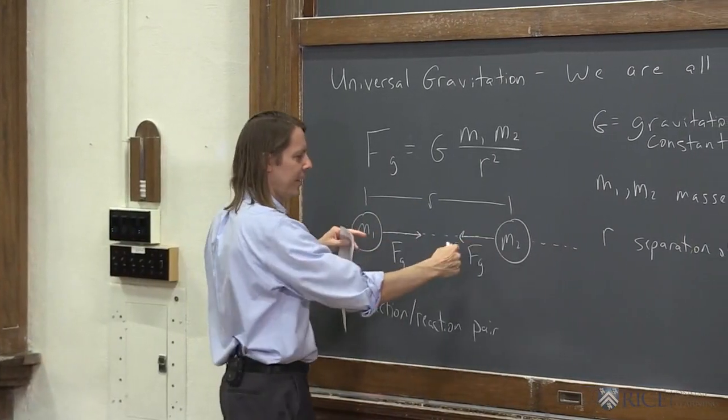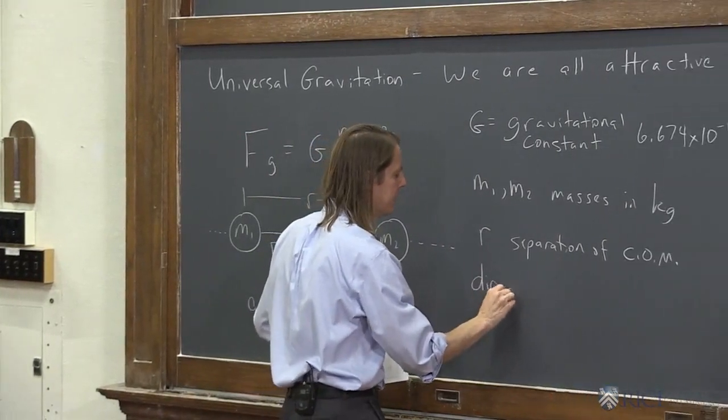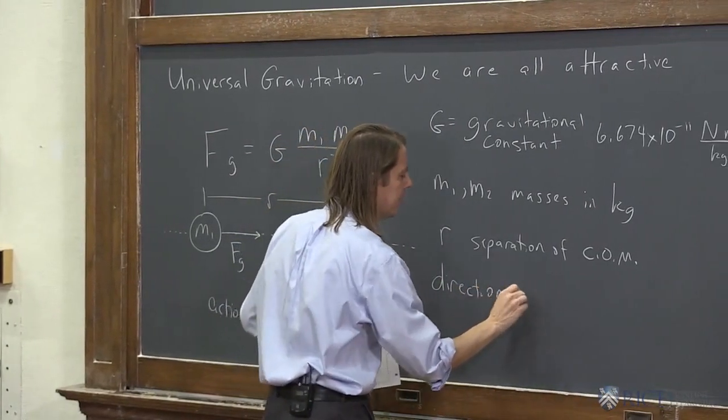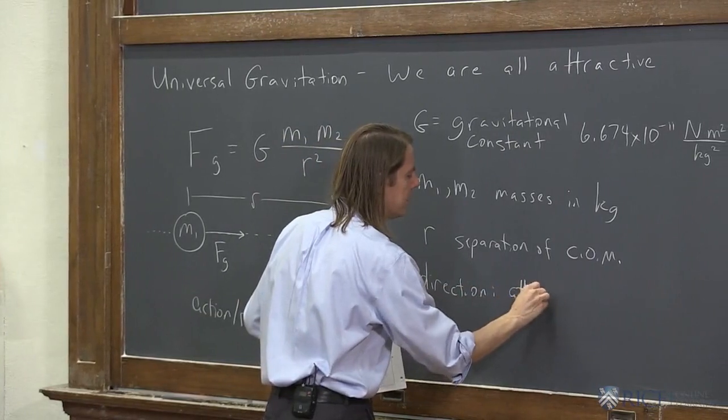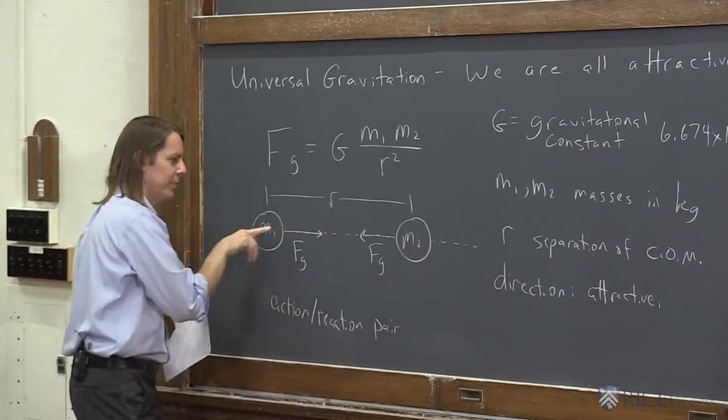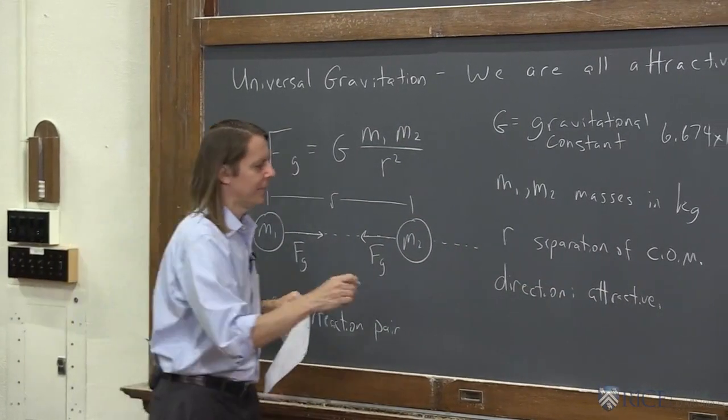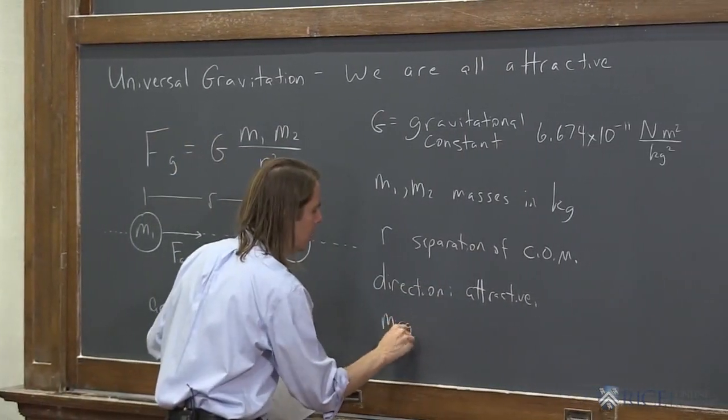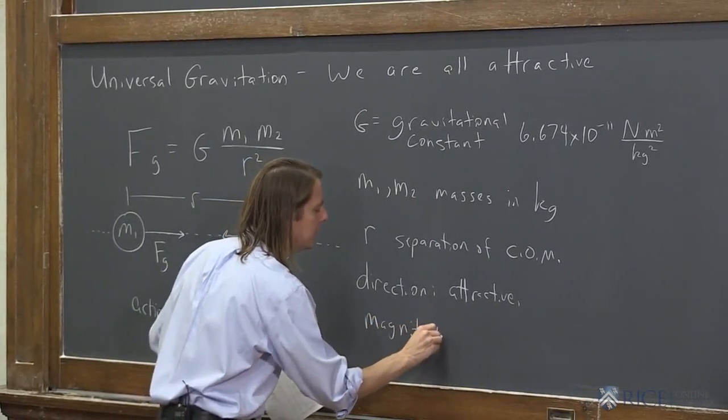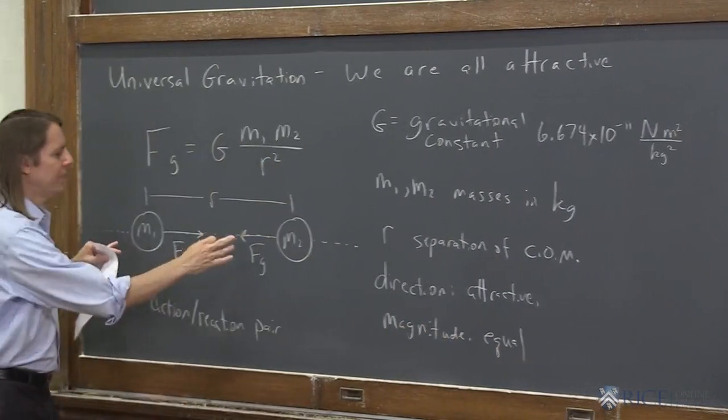Now, I've drawn it as a vector here. So let's think about the direction of the vector, the direction of each force. And I'll just put attractive. Okay, so for this one, it's that way. And for this one, it's that way. It's toward the other mass. And for the magnitude, I'll remind you that it's equal. Each one feels the same magnitude.